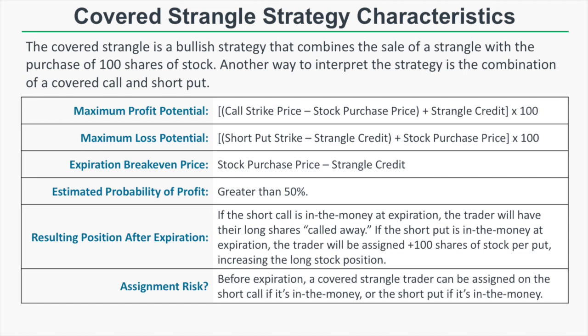If the stock price increases significantly, we'll have to sell our shares at the call strike price, and if it falls significantly, we'll purchase more shares at the put strike price. The covered strangle is ideal for those who wish to sell shares at a higher price but wish to buy more at a lower price. If the stock price remains between the short strikes, you collect significant premium and keep reducing the effective cost of your long shares.